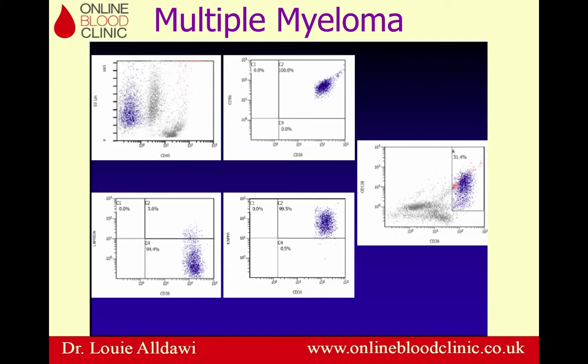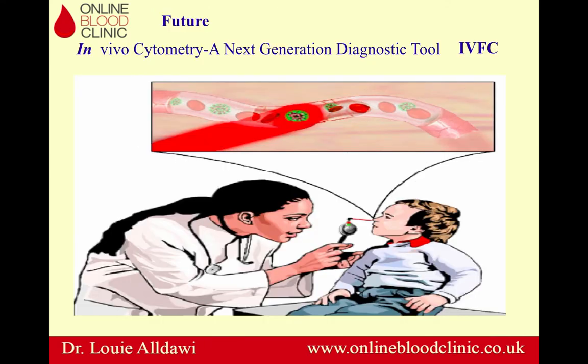To diagnose multiple myeloma using flow cytometry, the first slide (top left) shows a CD45-negative population in blue — the cells of interest. Further analysis for CD38 and CD56 shows positivity for both. The cells are positive for CD38 with kappa restriction and positive for CD138 — all very characteristic of multiple myeloma. In the future, flow cytometry may be used in vivo without even the need of a blood sample.